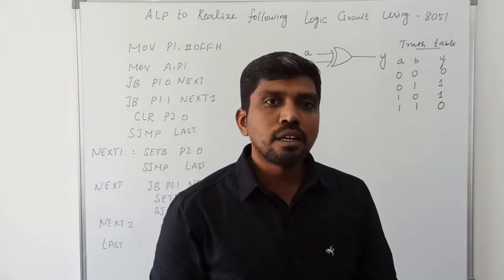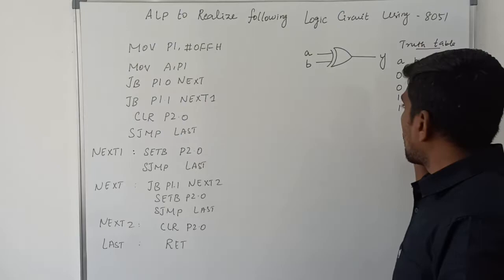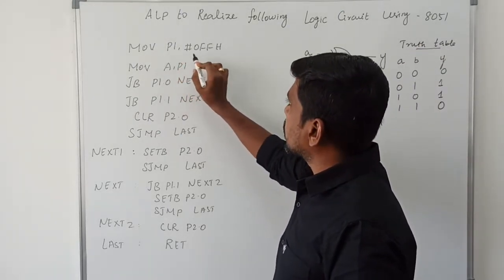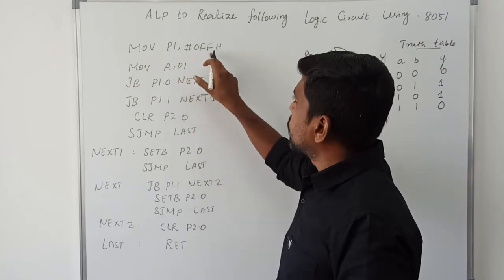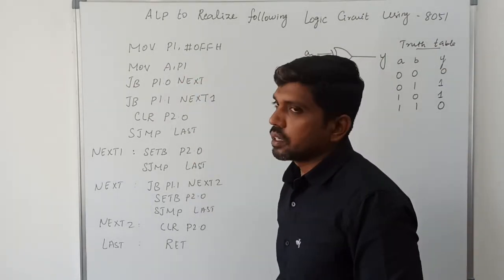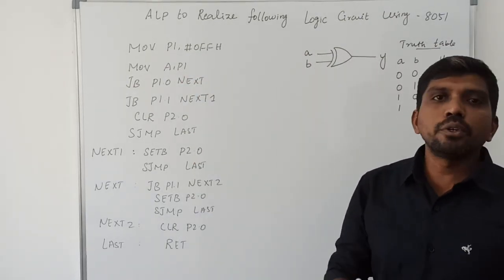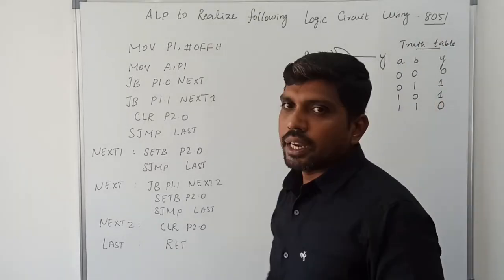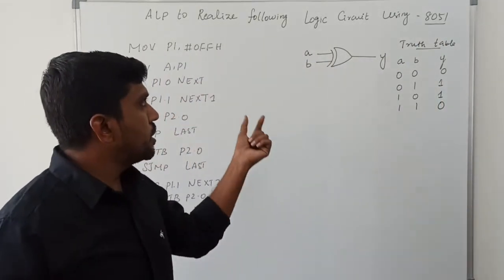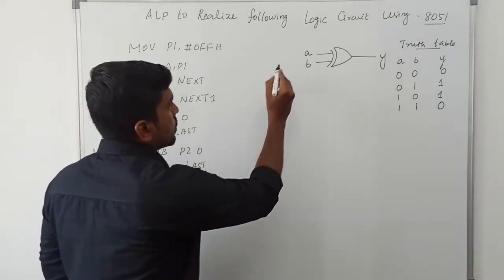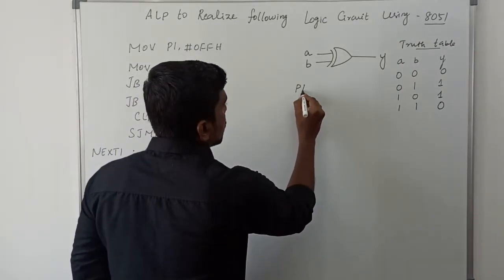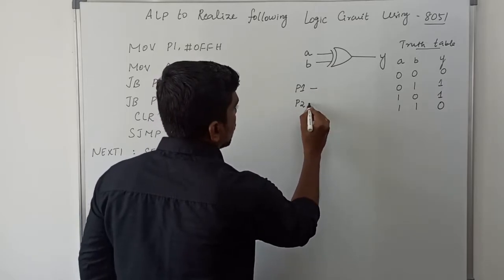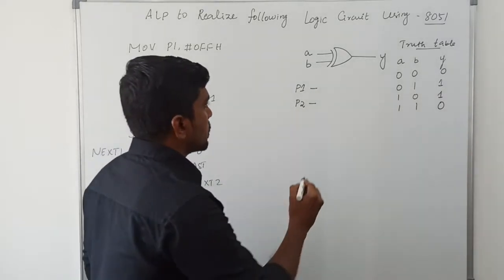Based on this truth table we can write the program and check the input and output values. The first instruction is MOV P1, #0FFh. In this program I am using two ports of the 8051 microcontroller — it has four ports, but in this program I am using Port 1 and Port 2.